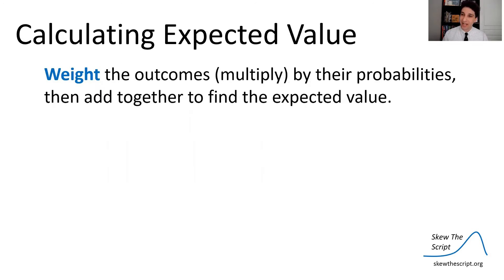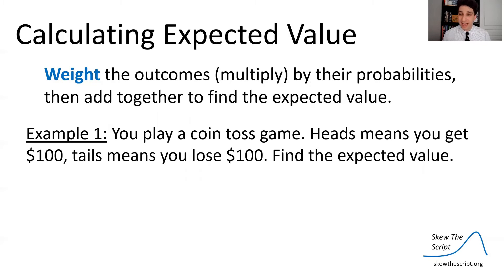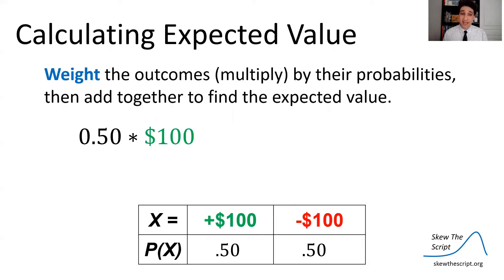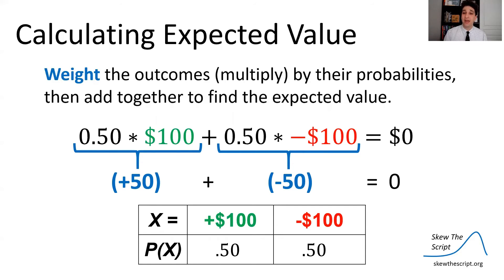To calculate expected value directly, you weight the outcomes by their probabilities through multiplication, then add them together. For example, in a coin toss game where heads gets you $100 and tails loses you $100, with a fair coin at 50% each: multiply $100 by 50% and add -$100 by 50%, and you get $0. This is a fair game — you average plus $50 and minus $50 to get zero. The expected value after many trials is an average of $0 gain or loss.